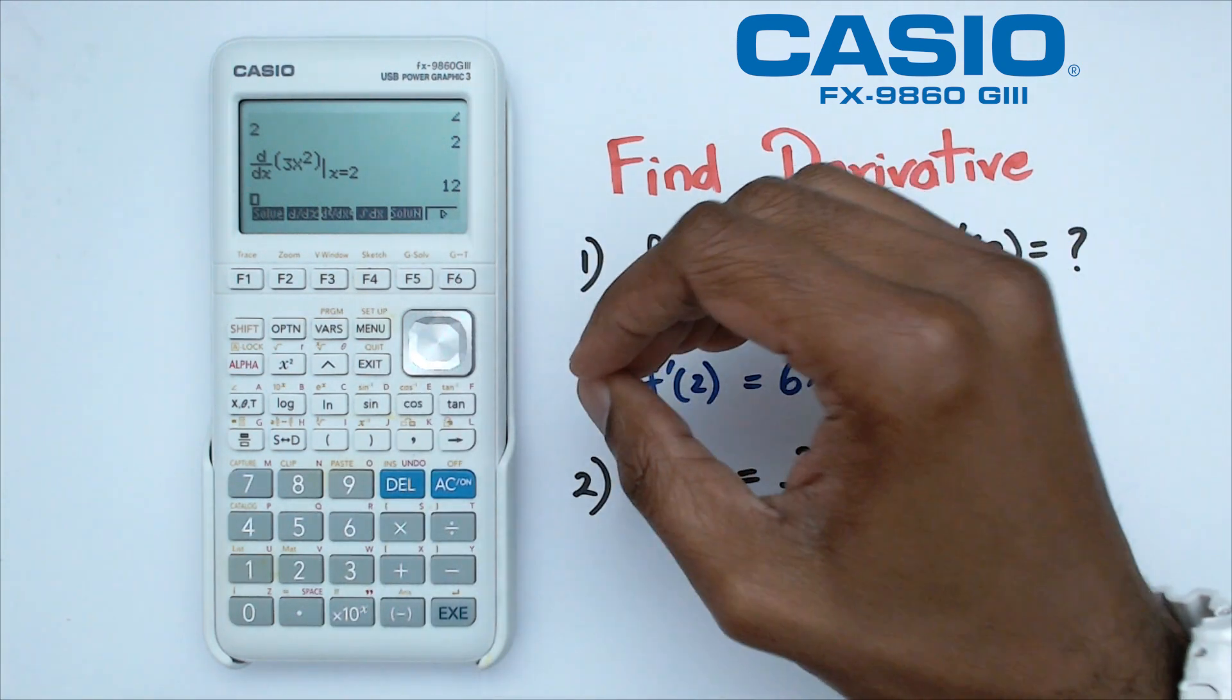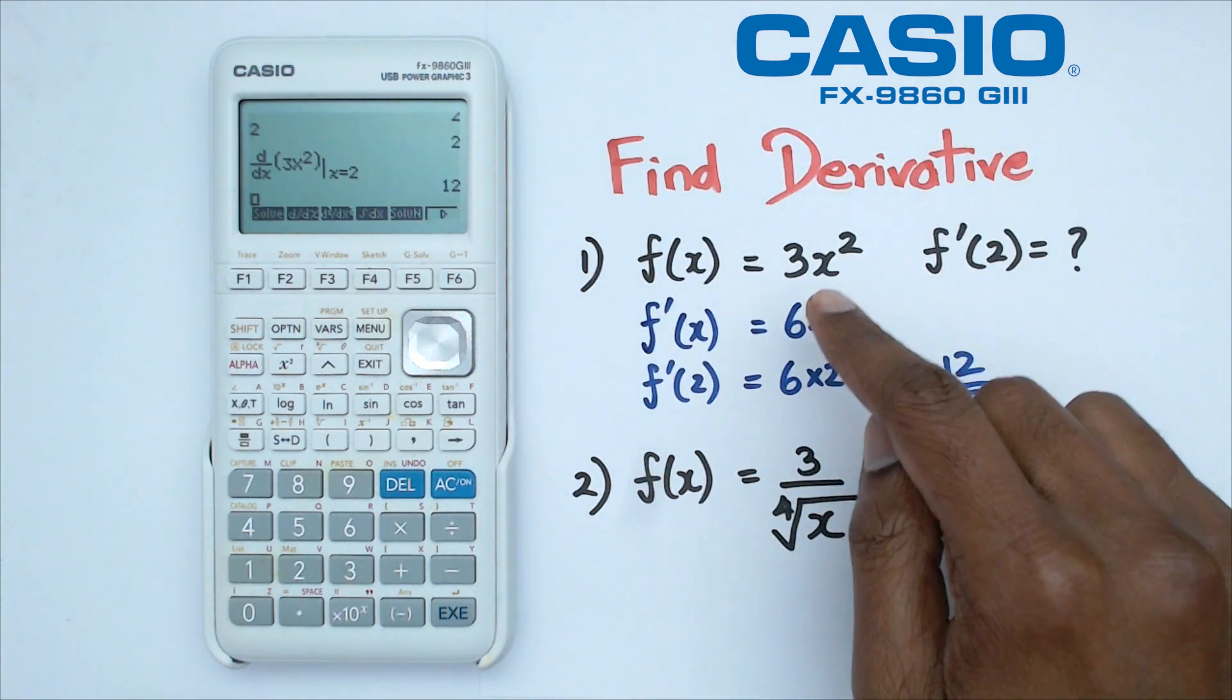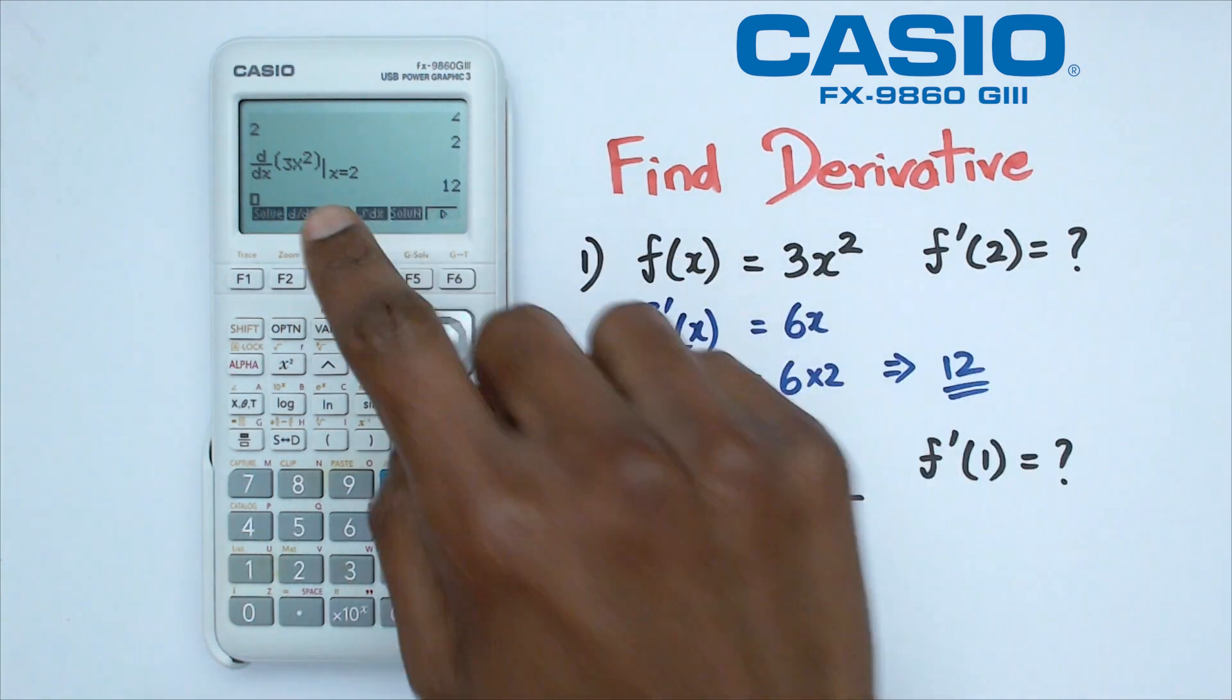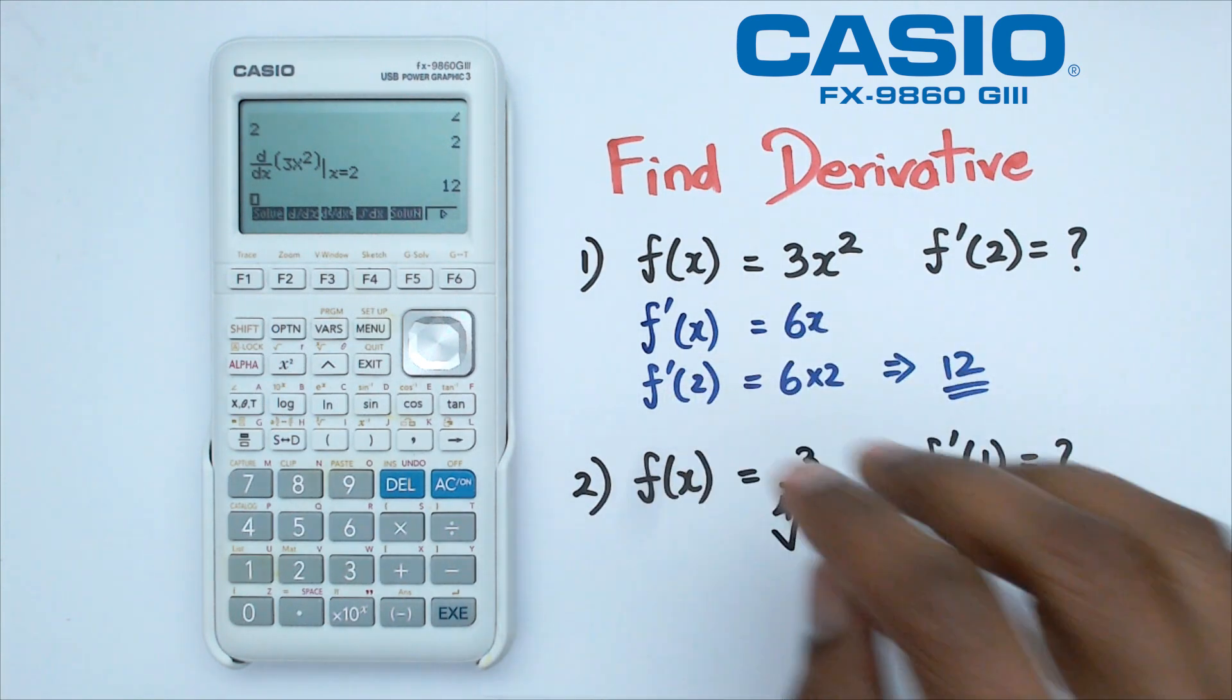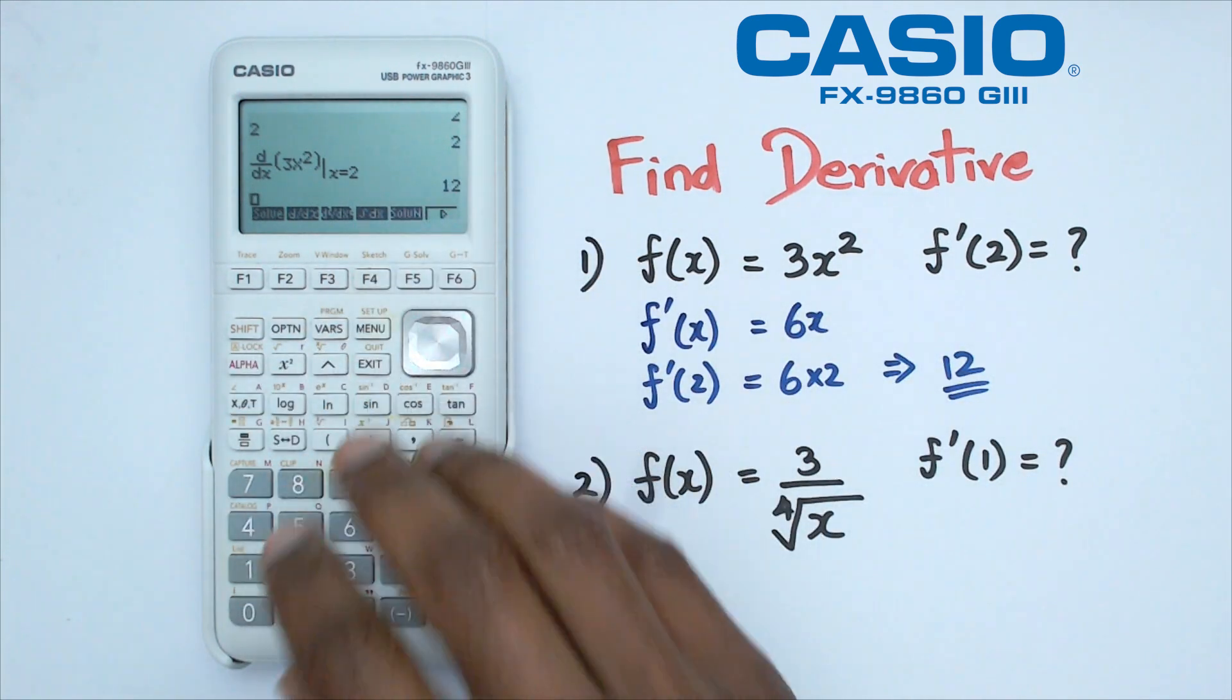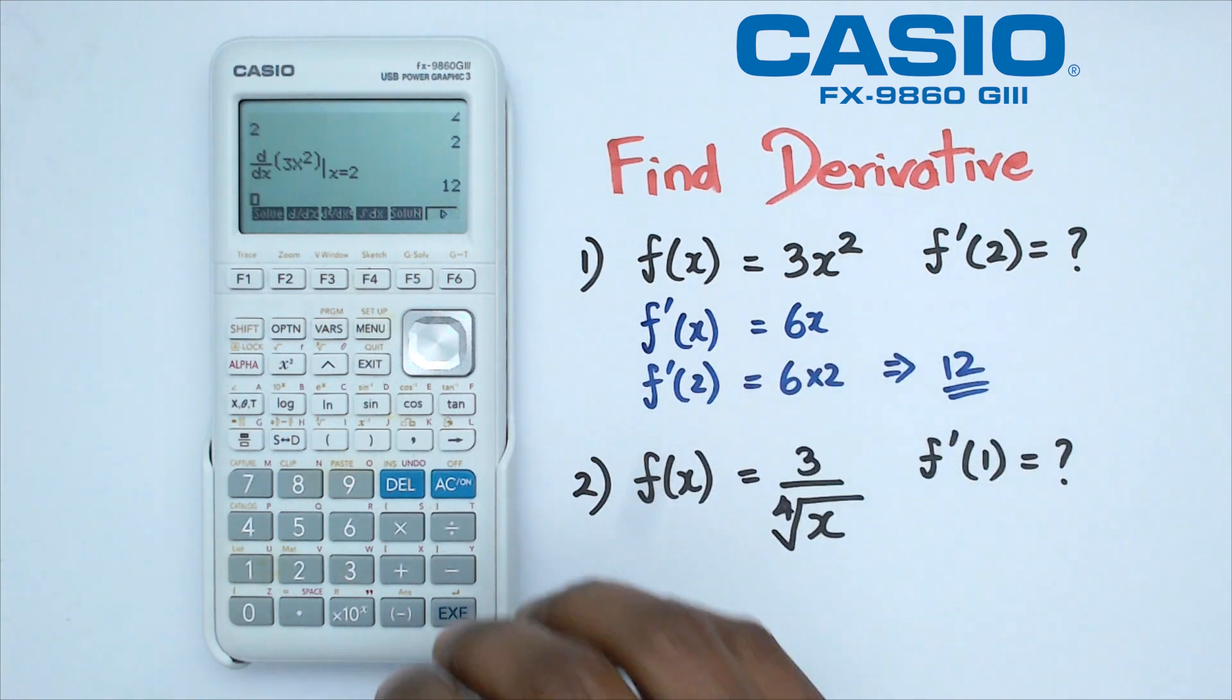Now if you're doing NCEA level 3 or level 2 exams, then you do need to show your differentiated function. So you can't just do this in the calculator and just put the answer only. You won't get any grades for that. Now what this calculator does is that it's a really great tool to check whether your answers are actually correct or not.